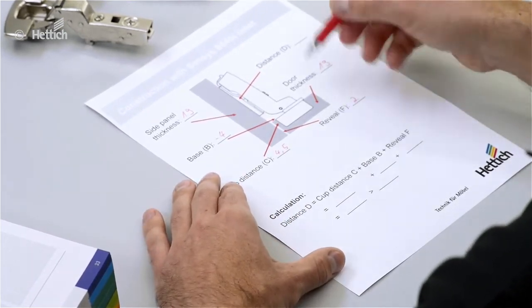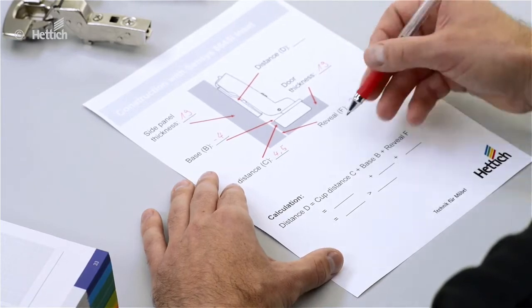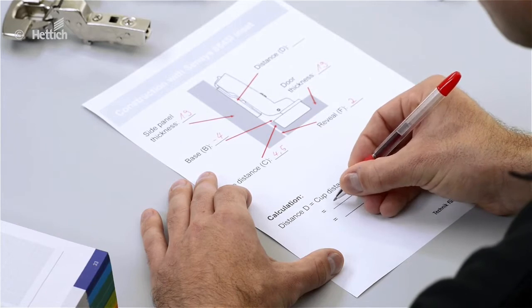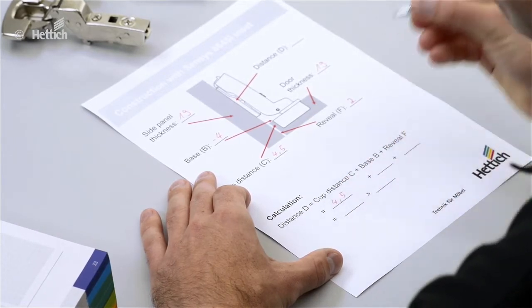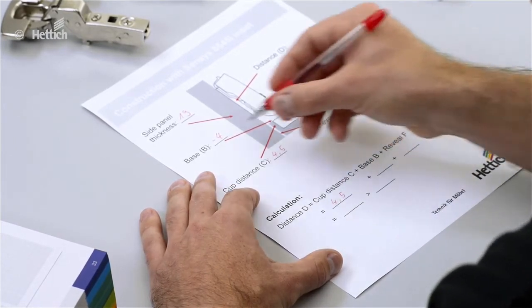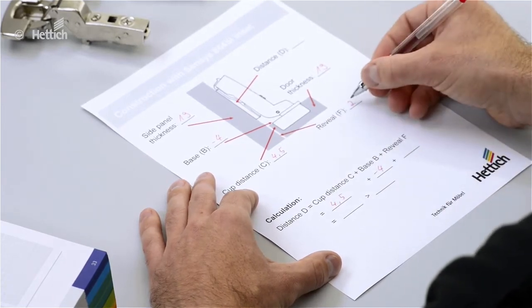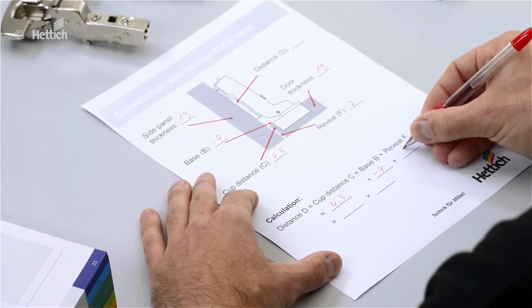So we get a value of 2.5 millimeters. Then we can fill in the values into the formula: cup distance C 4.5 millimeters, plus base B minus 4, and the reveal 2 millimeters.